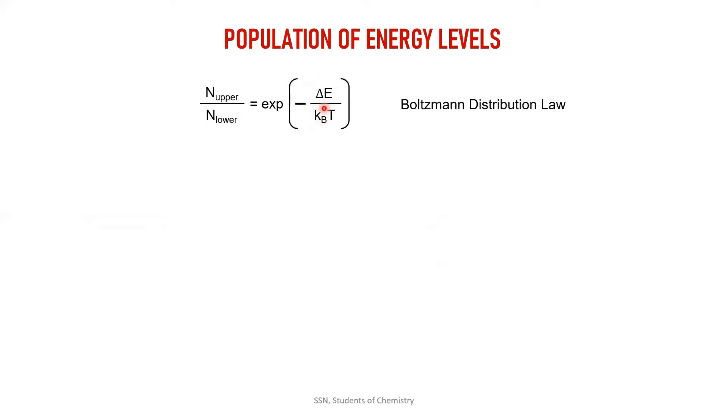We already know what is kb. kb is Boltzmann constant, T is temperature. For room temperature, I am going to calculate this value. It is approximately 300 kelvin. For nuclei, if I apply all these values, kb Boltzmann constant value is 1.38 into 10 power minus 23 joule kelvin inverse, which is a constant. I'm going to apply my temperature as 300 kelvin for room temperature.